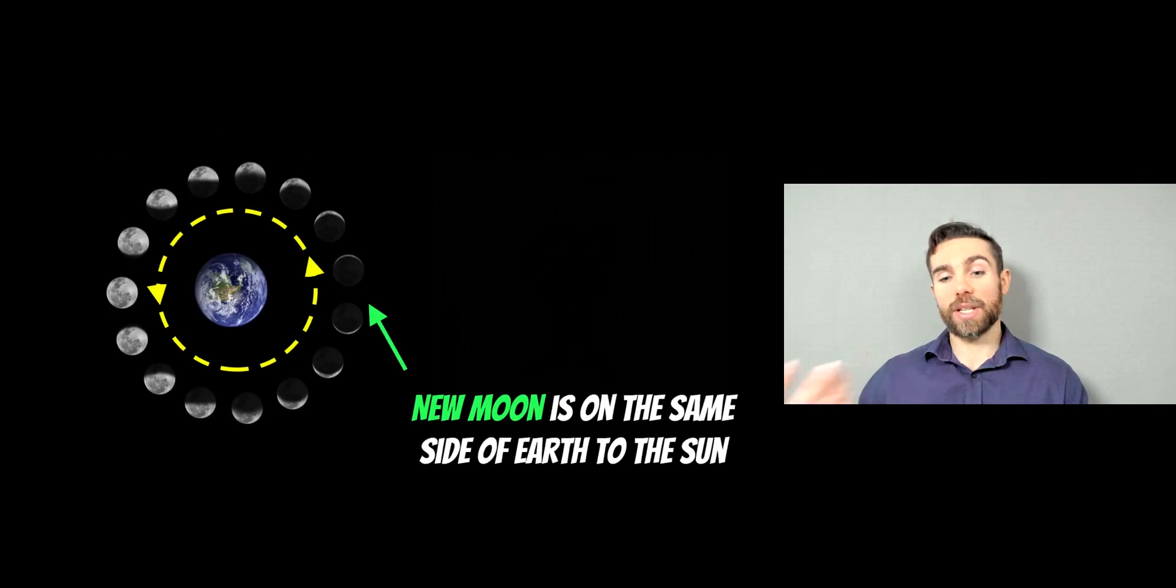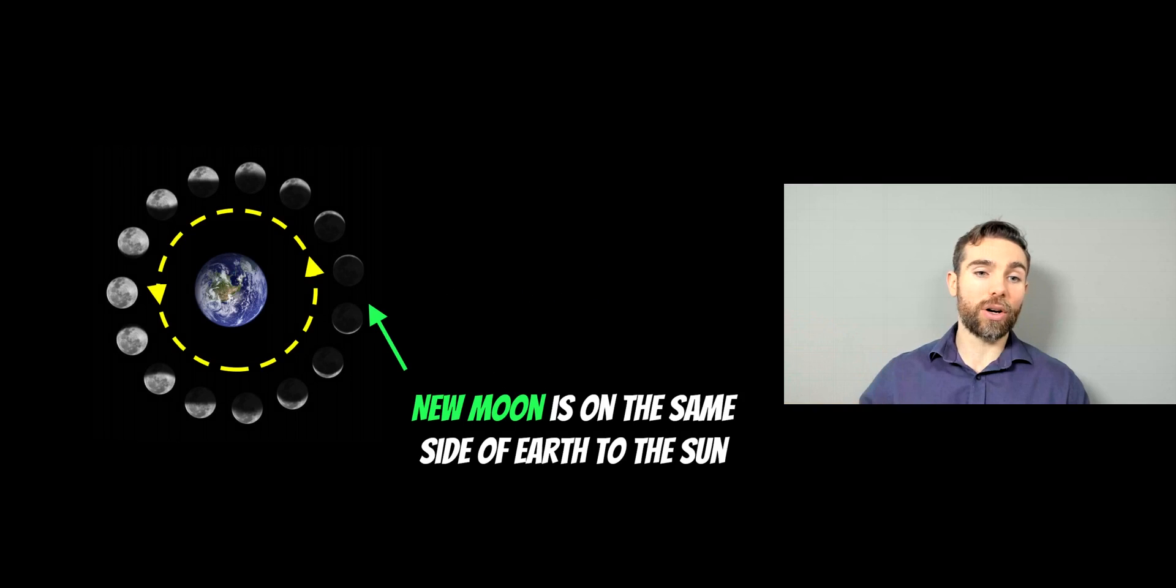On the opposite side, when it's between the Earth and the sun, the face facing towards Earth can't have any light from the sun because it's on the opposite side. So in that case, you get the new moon, which is when there's no sunlight reflecting back off it at all. And then as it goes round, you get various different phases in between as well.